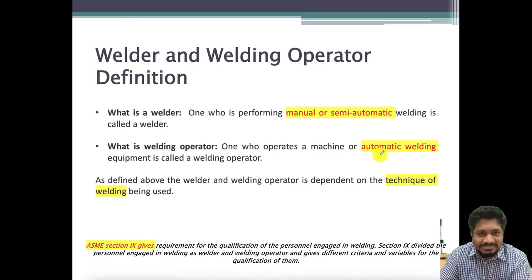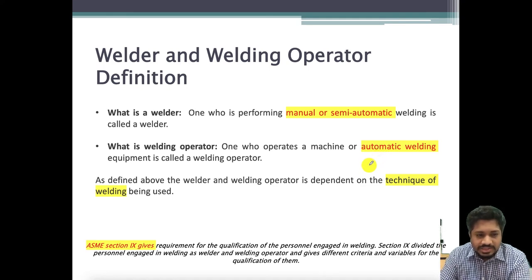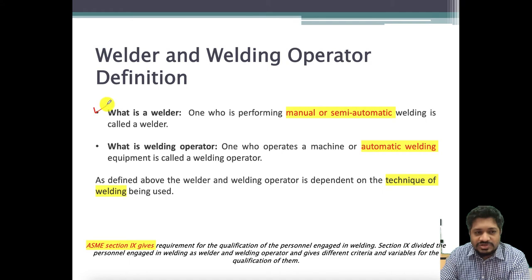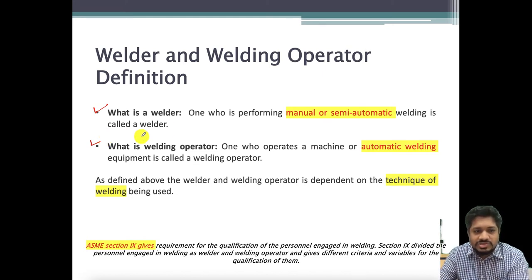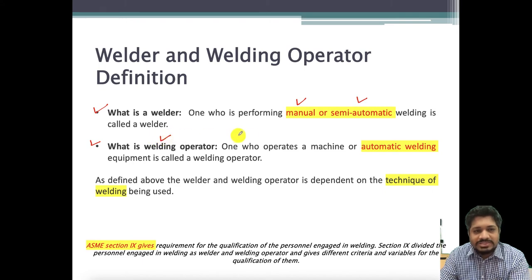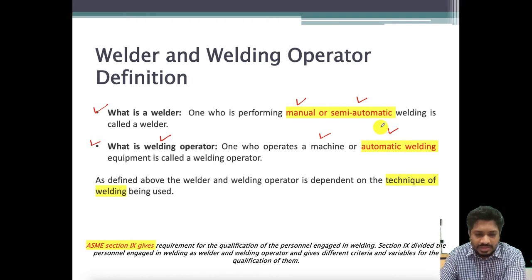According to ASME, the American Society of Mechanical Engineering, Section 9 gives requirements for the qualification of a welder. The definition of a welder and a welding operator will help us understand manual, semi-automatic, and automatic welding. A welder is a person who performs manual or semi-automatic welding, and a welding operator is a person who operates a machine or automatic welding equipment.